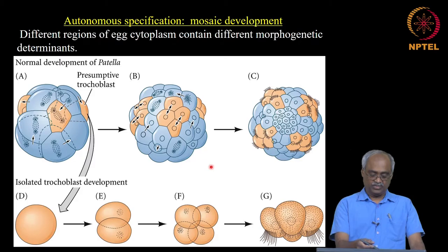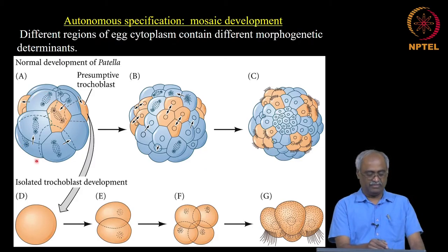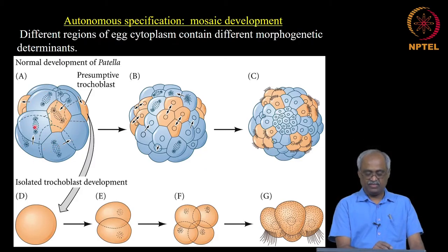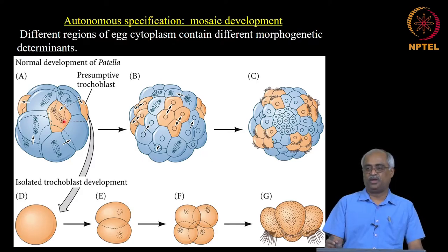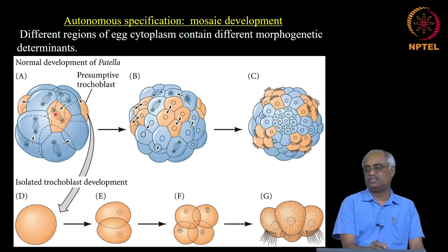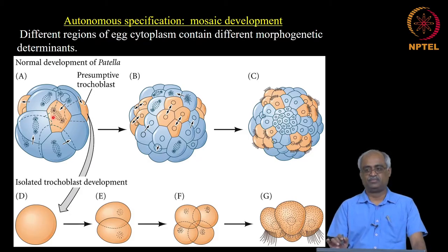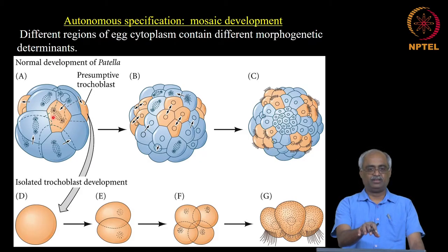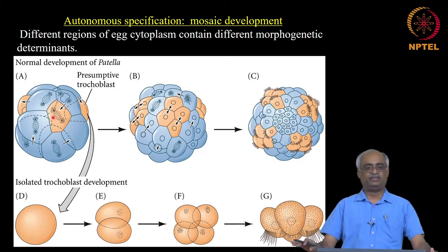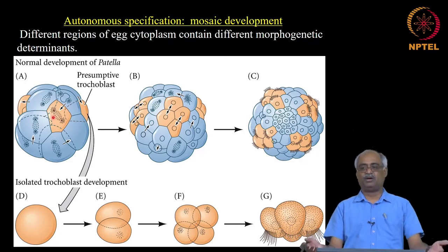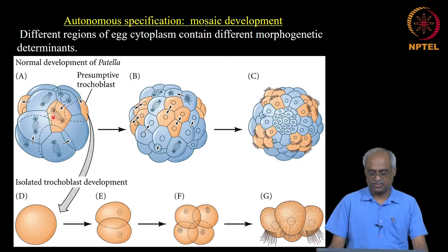The opposite is also true: if you remove one cell from the embryo, the rest will make a final structure missing what that cell would have contributed. It is like removing one tile from a mosaic floor — only that tile is missing; the rest of the floor is completely fine. This is autonomous specification.